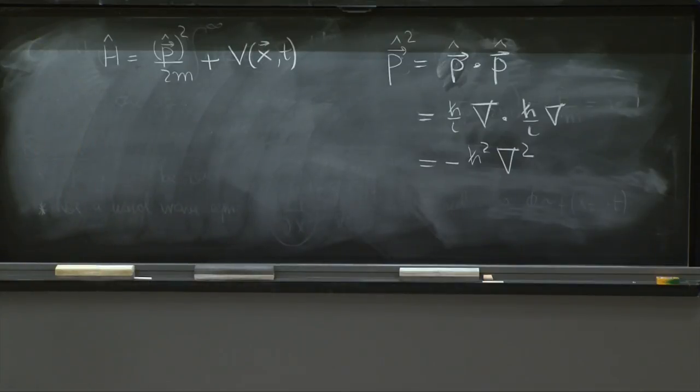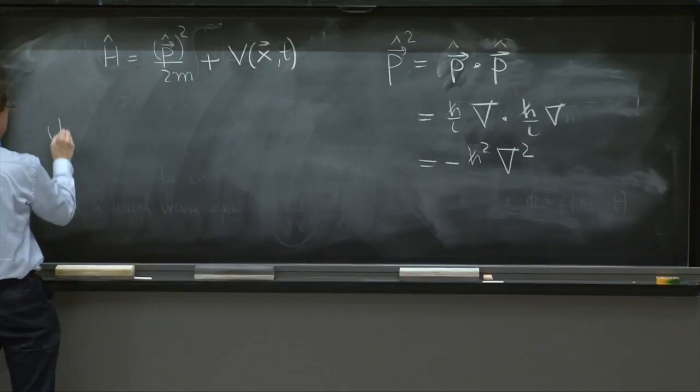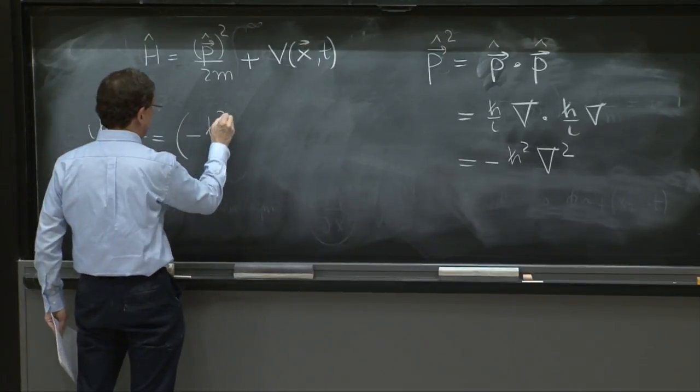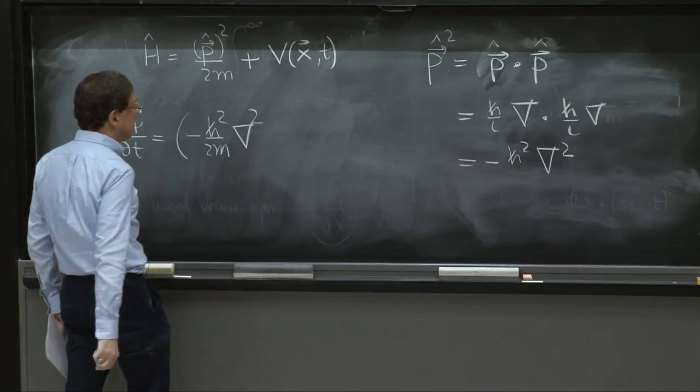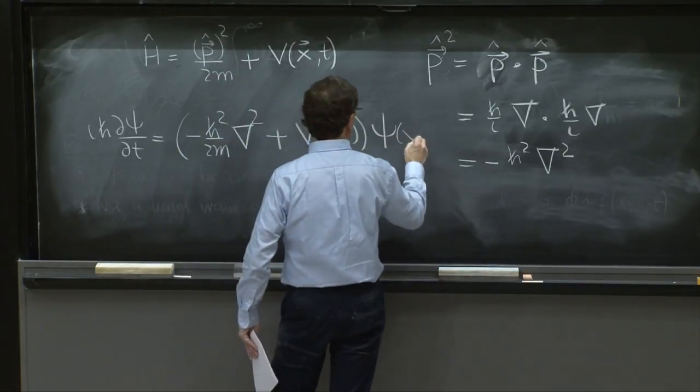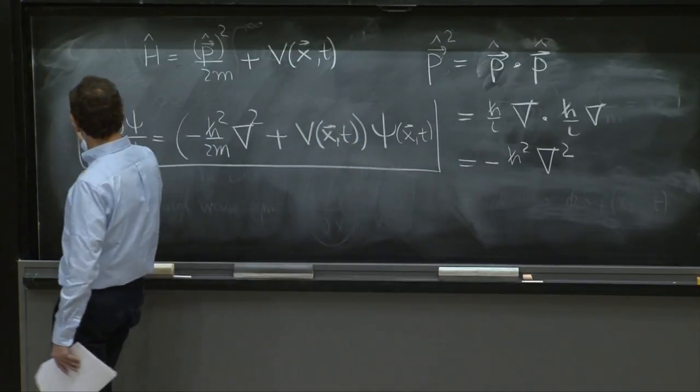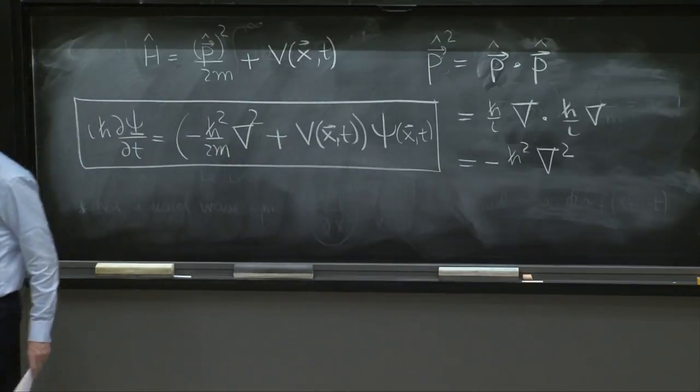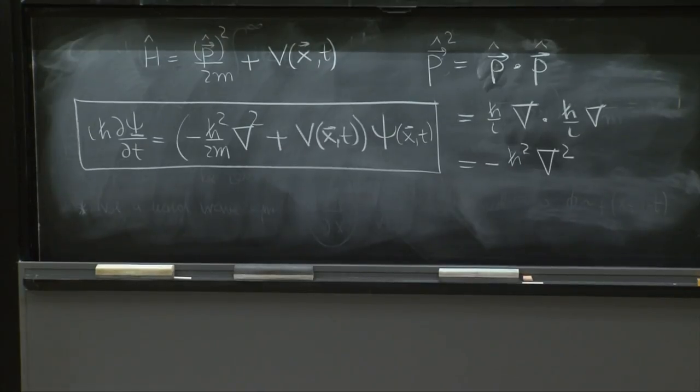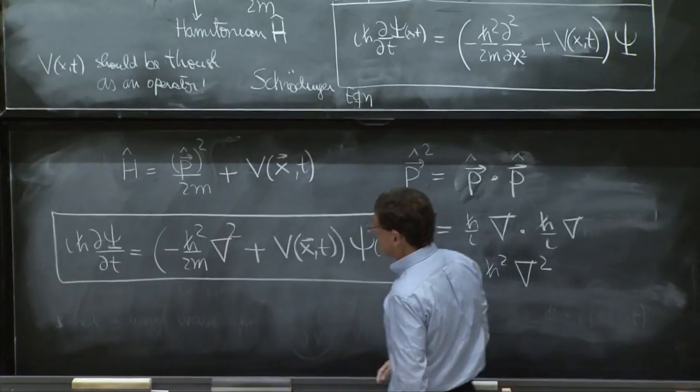So your Schrodinger equation will be i h bar d psi dt is equal to the whole Hamiltonian, which will be minus h squared over 2m, now Laplacian, plus v of x and t, multiplying by psi of x vector and t. And this is the full three dimensional Schrodinger equation. So it's not a new invention. If you invented the one dimensional one, you could have invented the three dimensional one as well. The only issue was recognizing that the d second dx squared now turns into the full Laplacian, which is a very sensible thing to happen.